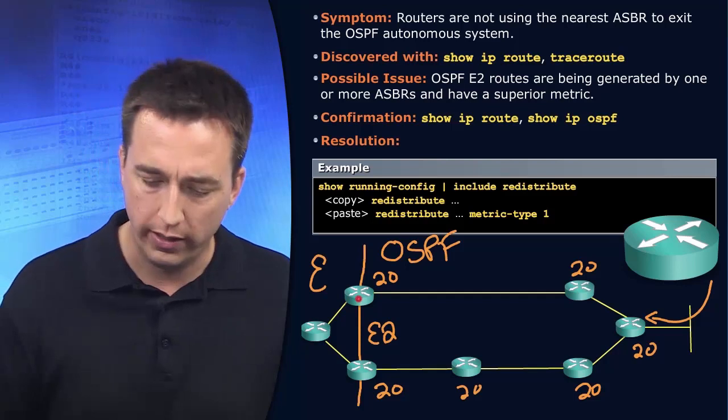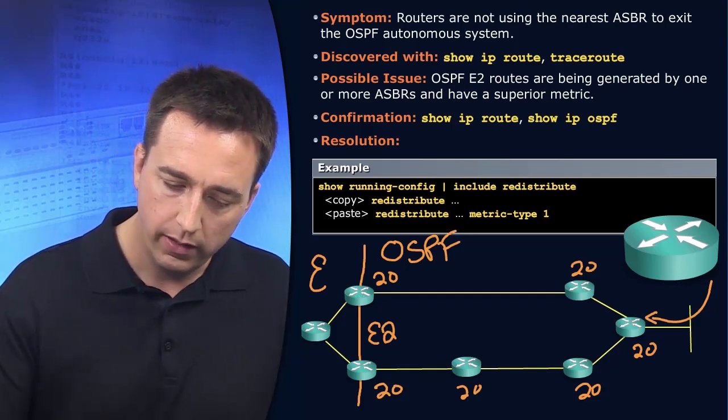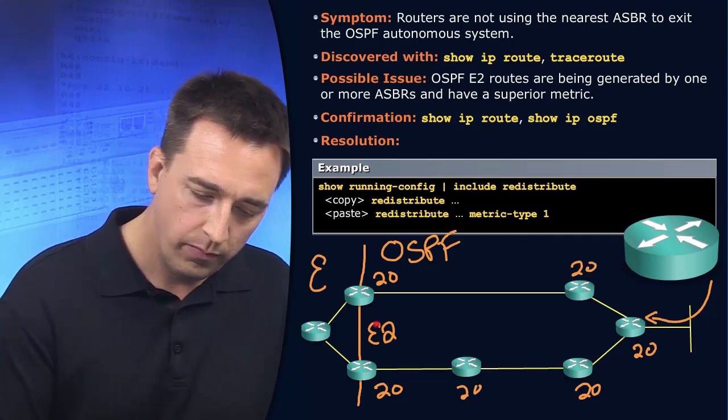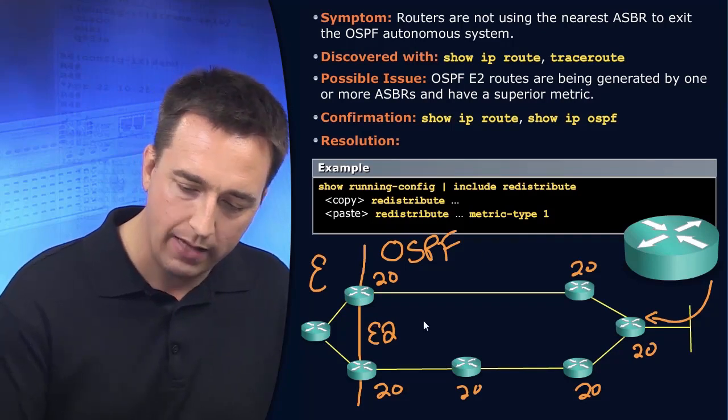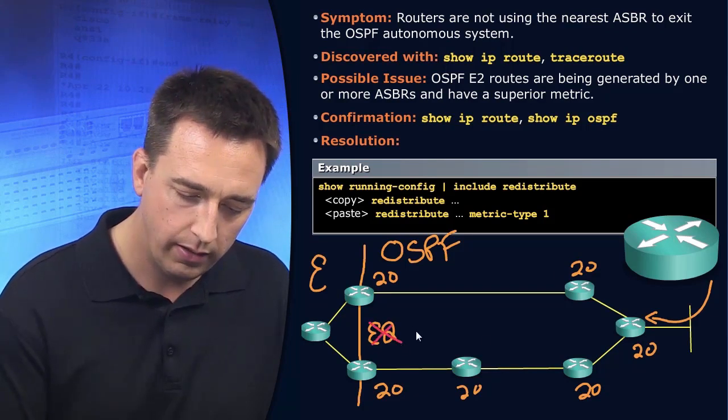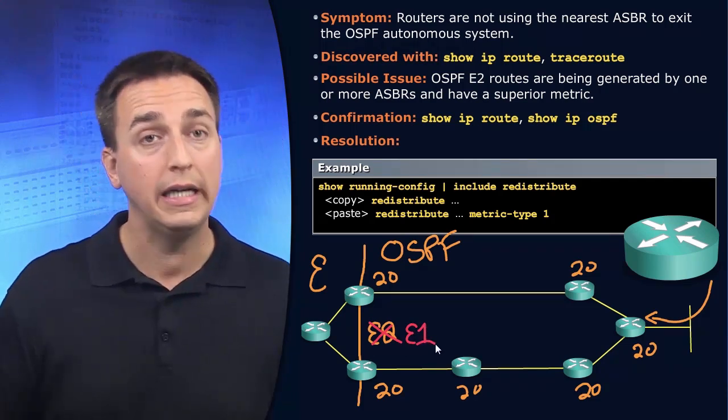And what happens if you use E1 instead of E2? Well, when you use E1, your metric type changes. And the way that OSPF treats that metric is going to be different.